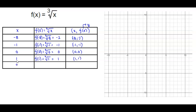Then using positive 8, we have f of positive 8. We want to find the cube root of positive 8. So what number do you have to cube to get positive 8? Well, the answer is 2. And therefore, there is our ordered pair 8, 2.